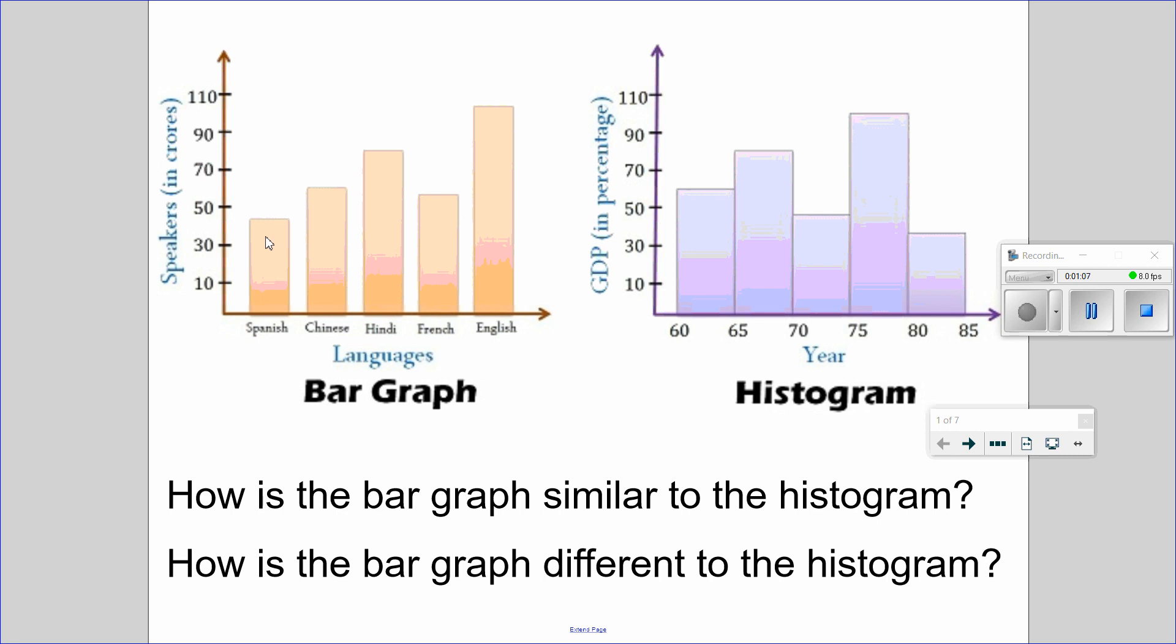Notice how this bar is specifically for Spanish. This bar is for Chinese. This one is for Hindi. These are languages, by the way. While in this one, it says there are 60, I assume it's countries maybe, or 60 something countries that are between 60 to 65.